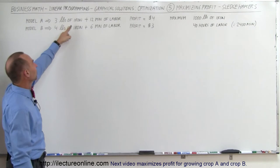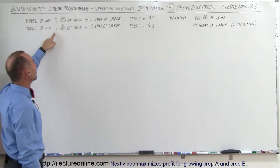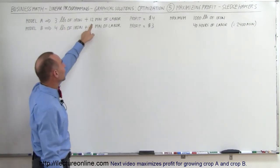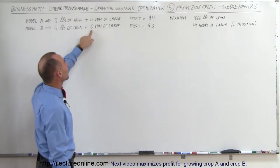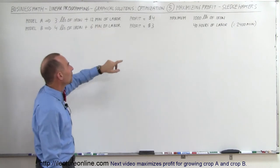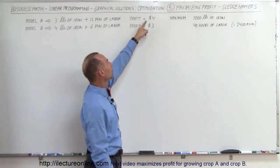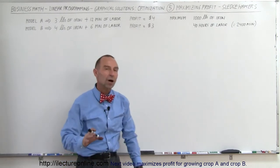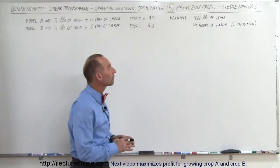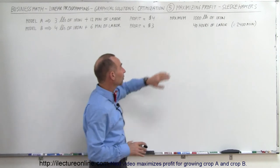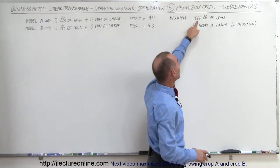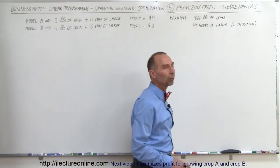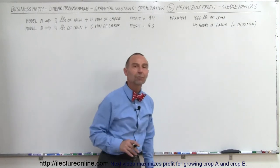Model A requires 3 pounds of iron and model B requires 4 pounds of iron. Model A requires 12 minutes of labor, model B requires 6 minutes of labor. We make $4 of profit on each model A and $3 of profit on each model B. There are several constraints: we have a maximum of 1,000 pounds of iron to use and 40 hours of labor, which is 2,400 minutes.